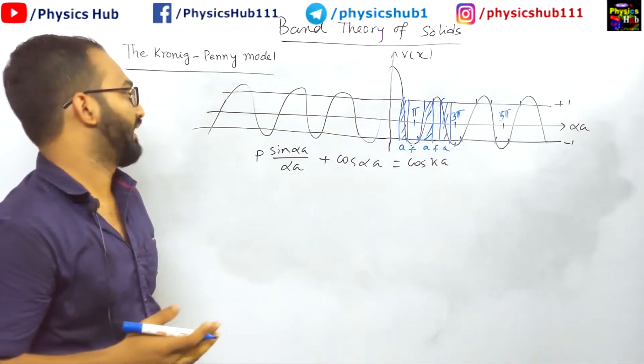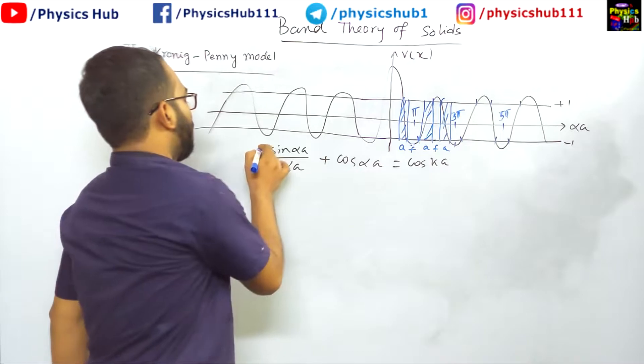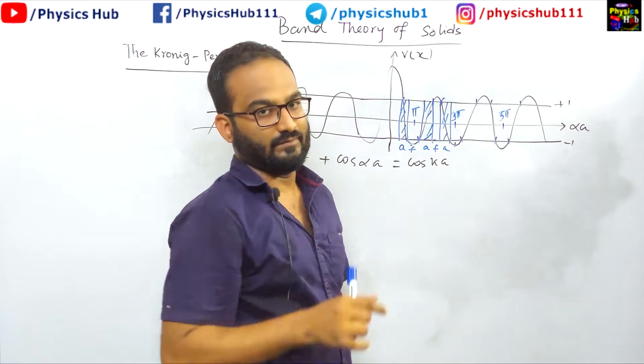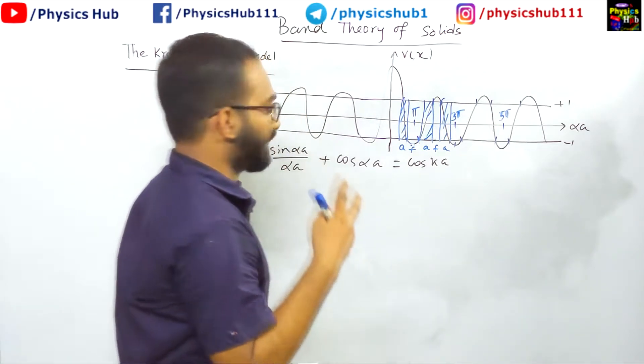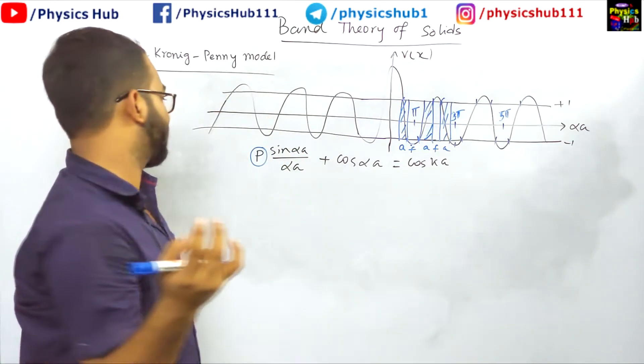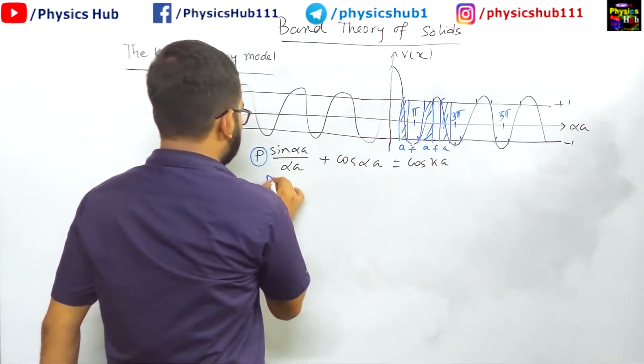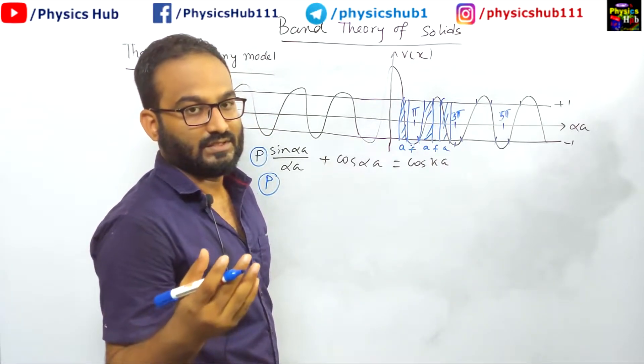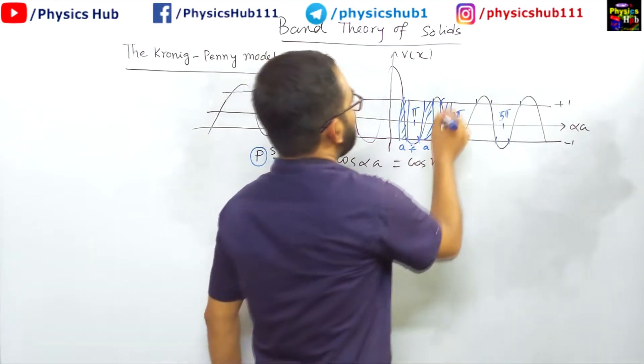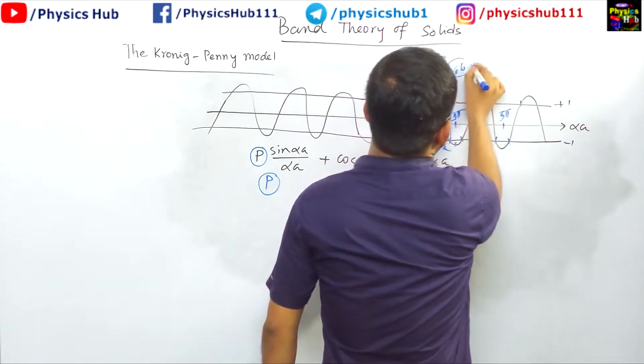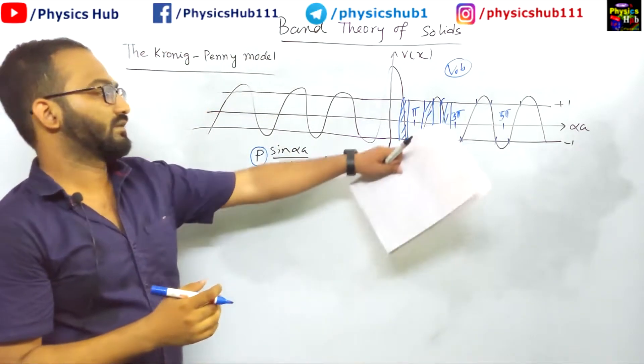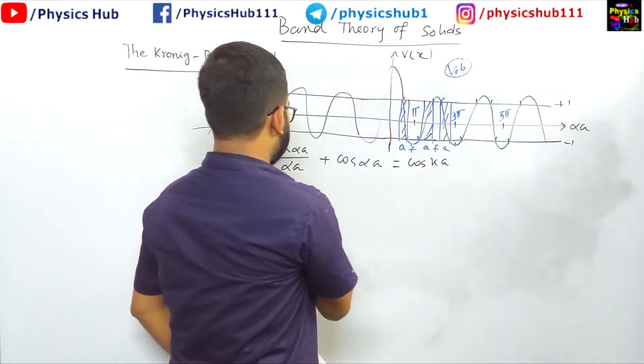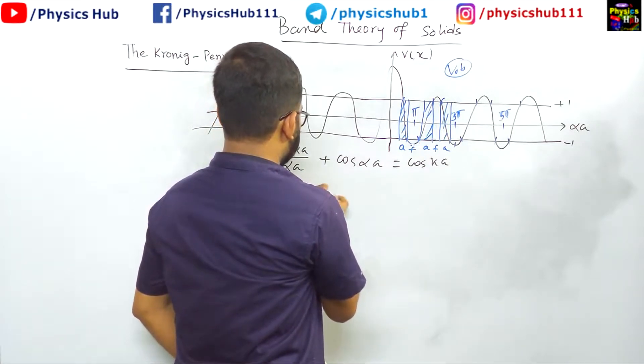I hope you have understood: allowed, forbidden, allowed, forbidden, allowed, and so on. So in this way you got the concept of band. Now depending on the value of p, this bandwidth will vary. Now we are taking two cases, two extreme cases regarding the value of p. You know this p has a special importance - it includes V₀ into b, the barrier strength. So this will tell us many things about the system.